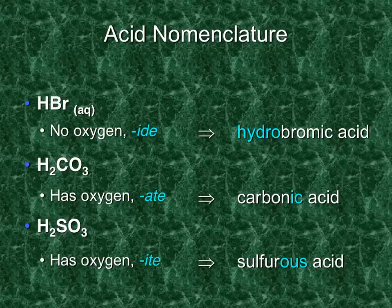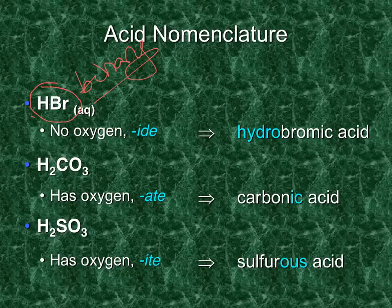Let's do a little practice. The technique: first ask yourself, is this binary or ternary? If it has only two different types of elements, it's binary, which means it begins with the prefix 'hydro' and ends with '-ic' — hydrobromic acid.